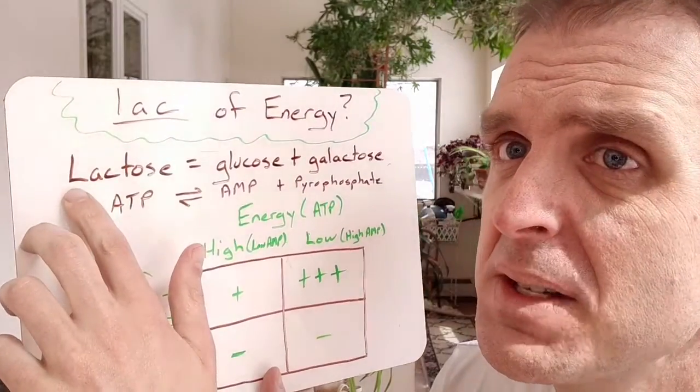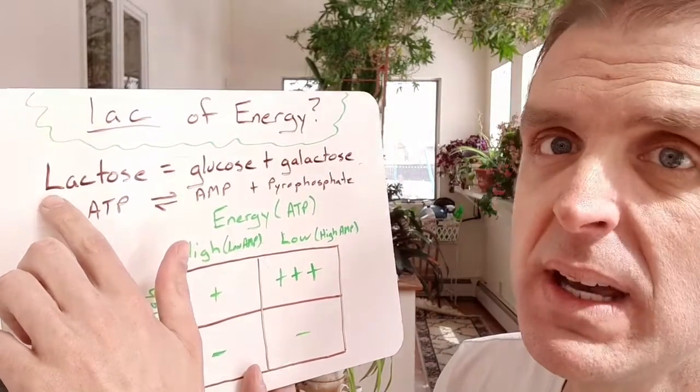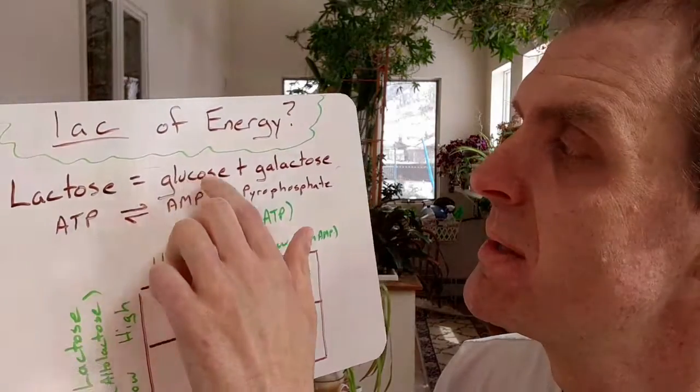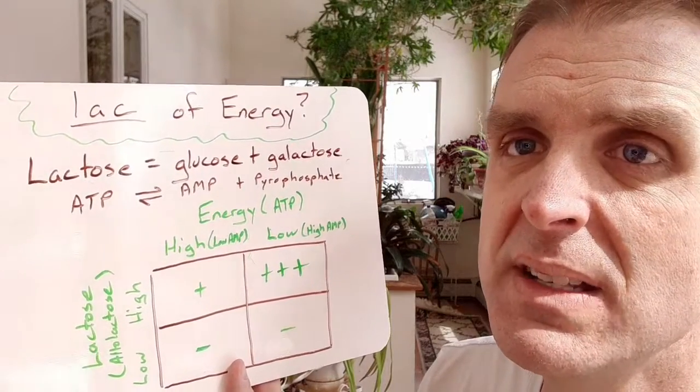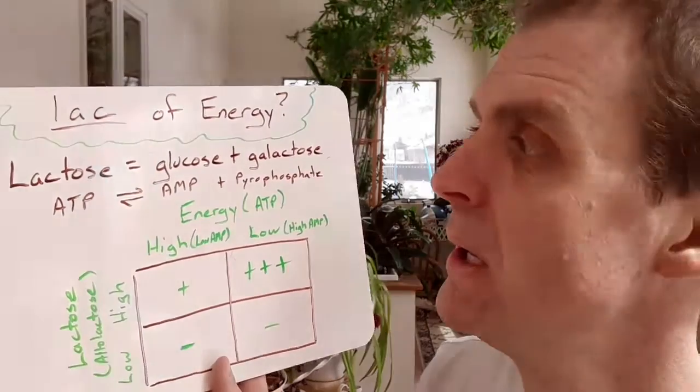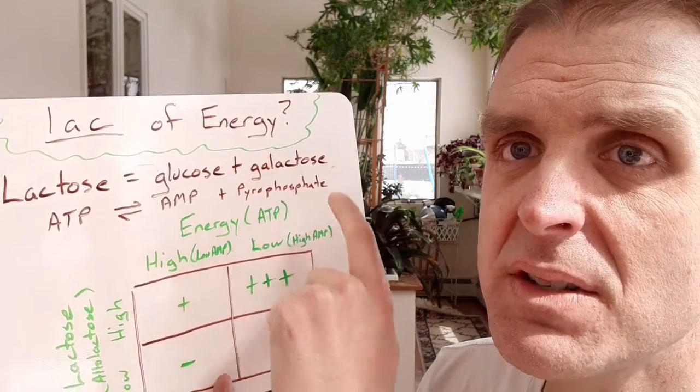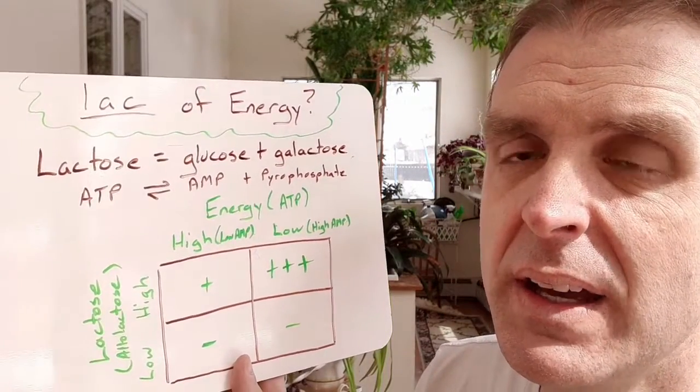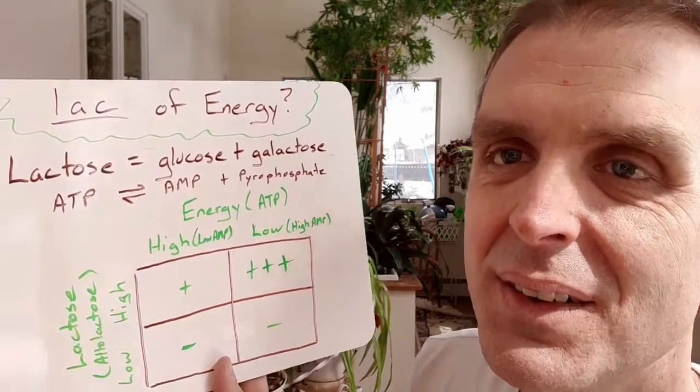Lactose is a molecule, it's a disaccharide, and it's made of glucose and galactose. So if we upregulate some enzymes to break down lactose, we will end up increasing the concentrations of glucose and galactose in the cell.